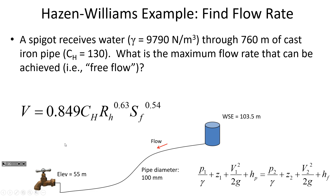Remember that R_h stands for hydraulic radius. For a closed circular pipe, hydraulic radius is diameter divided by four. For a non-circular conduit, the more generalized definition is area divided by wetted perimeter. So calculate S_f, then substitute into the Hazen-Williams equation — which gives velocity — and then calculate Q from that.